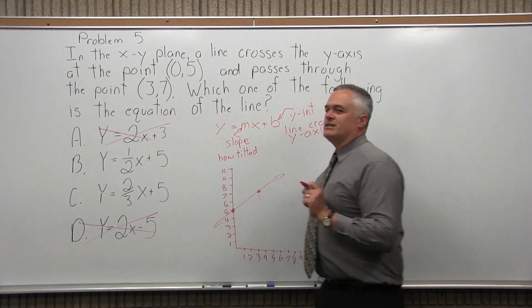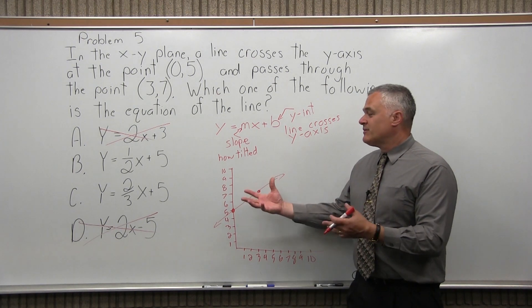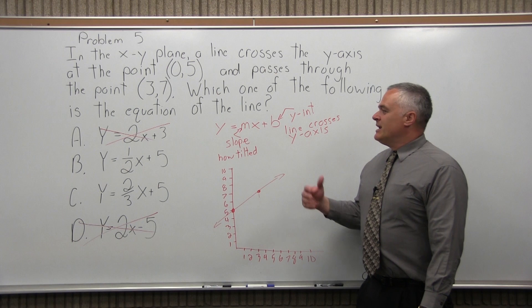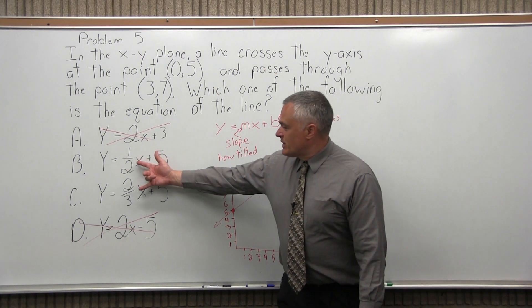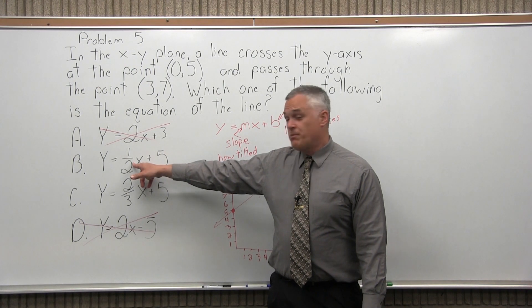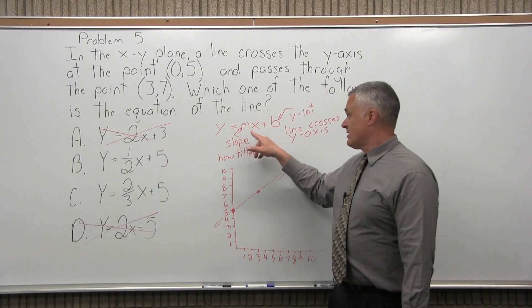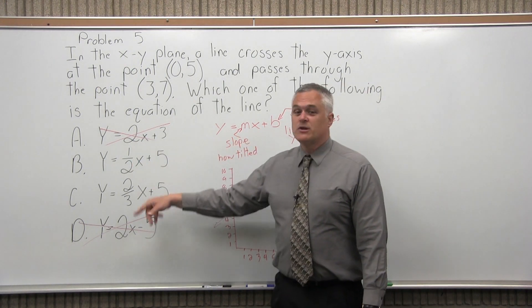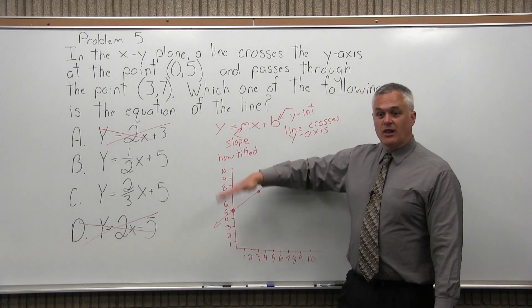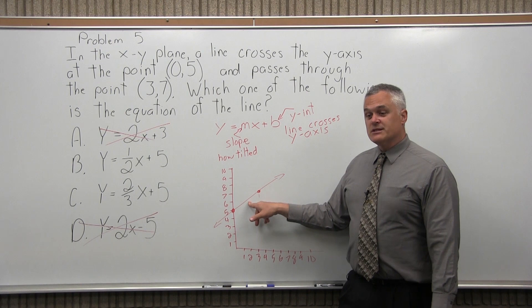Which one is it, B or C? So when you get down to, if you can eliminate a few choices in a multiple choice, that's always a good thing. Now, what's going to determine which one it is, is the number in front of the x. Do I have a slope of 1/2? The number in front of the x is the slope, or a slope of 2/3. So again, the slope is a measure of how tilted your line is. How tilted is this one?